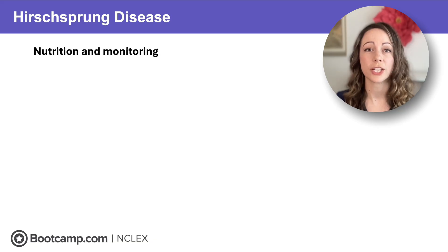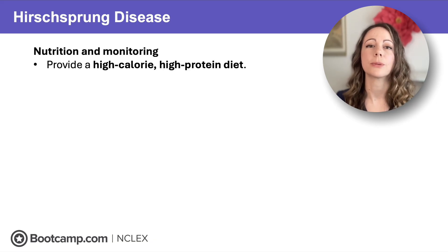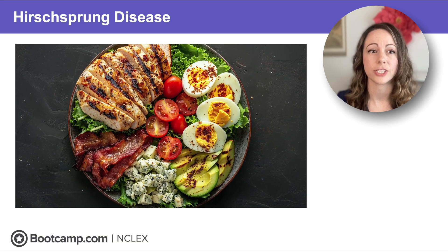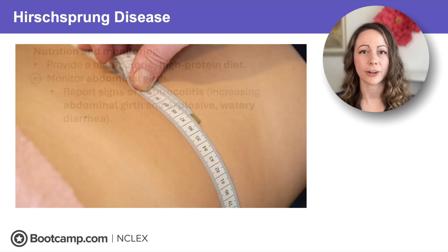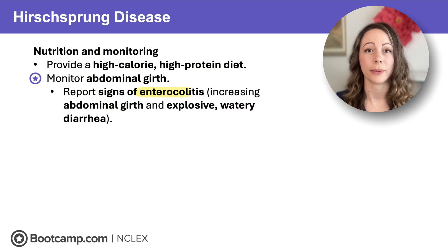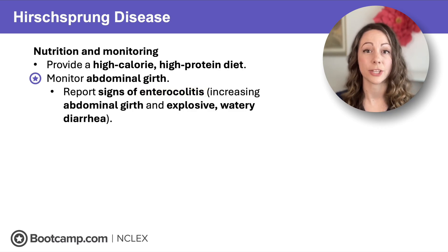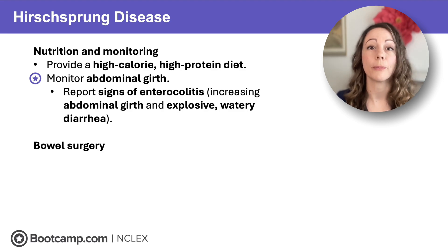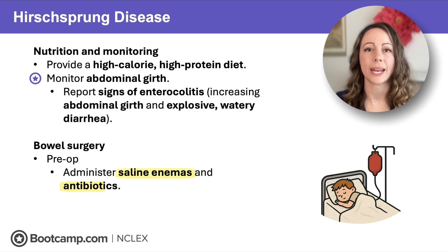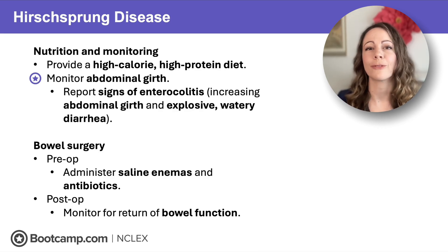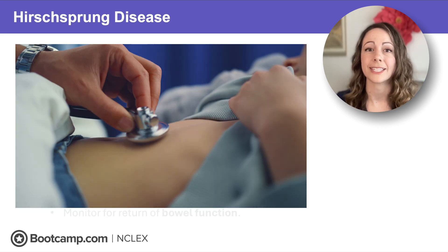For these clients, we provide nutrition and monitoring because they're losing weight. Prepare them for bowel surgery with a high-calorie, high-protein diet to ensure they're not malnourished. Monitor abdominal girth — increased abdominal girth is a sign of enterocolitis — as well as explosive watery diarrhea, and report those to the provider immediately. Bowel surgery removes the part of the colon without ganglion cells. Preoperatively, administer saline enemas and antibiotics to clear and sterilize the bowel. Postoperatively, monitor for return of bowel function — bowel sounds and passage of stool or gas.